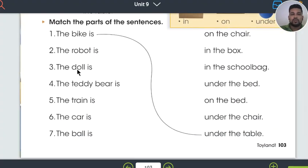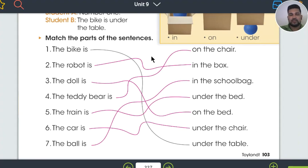How about number 3? The doll is... The teddy bear is number 4. And number 5, the train is... Six, the car is... And 7, the ball is... Let's check the answers. Háganlo ustedes. Sin antes ver la respuesta. Háganlo ustedes. Hasta después revisan sus respuestas.